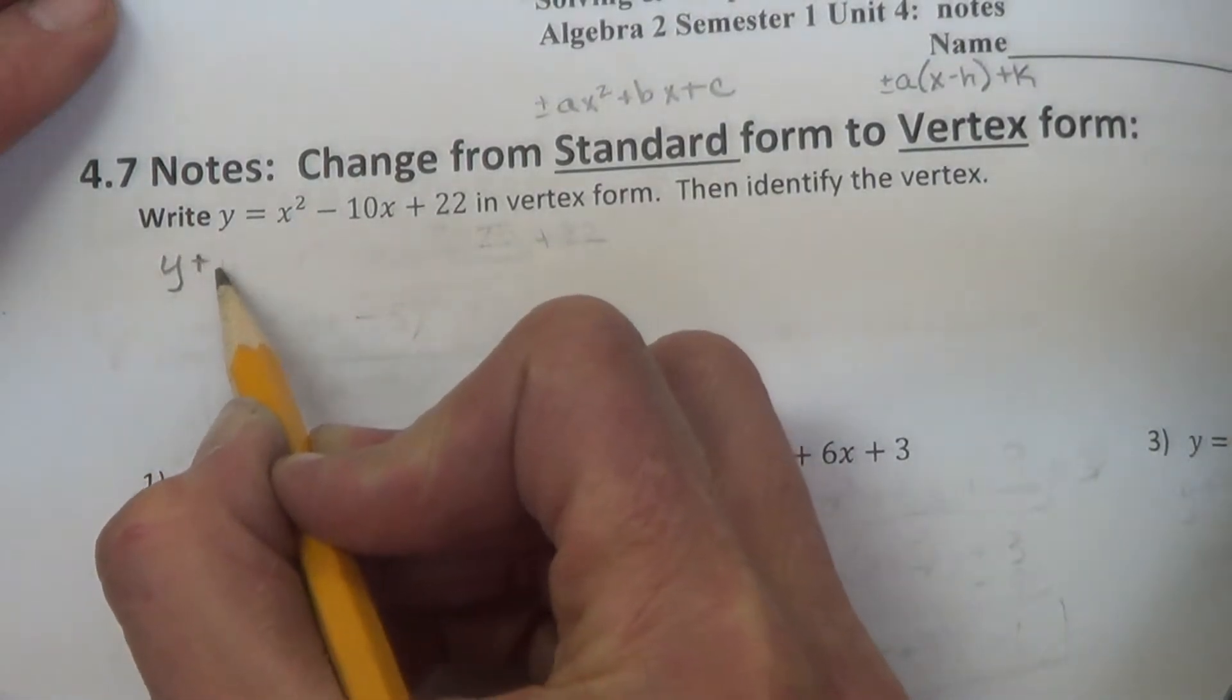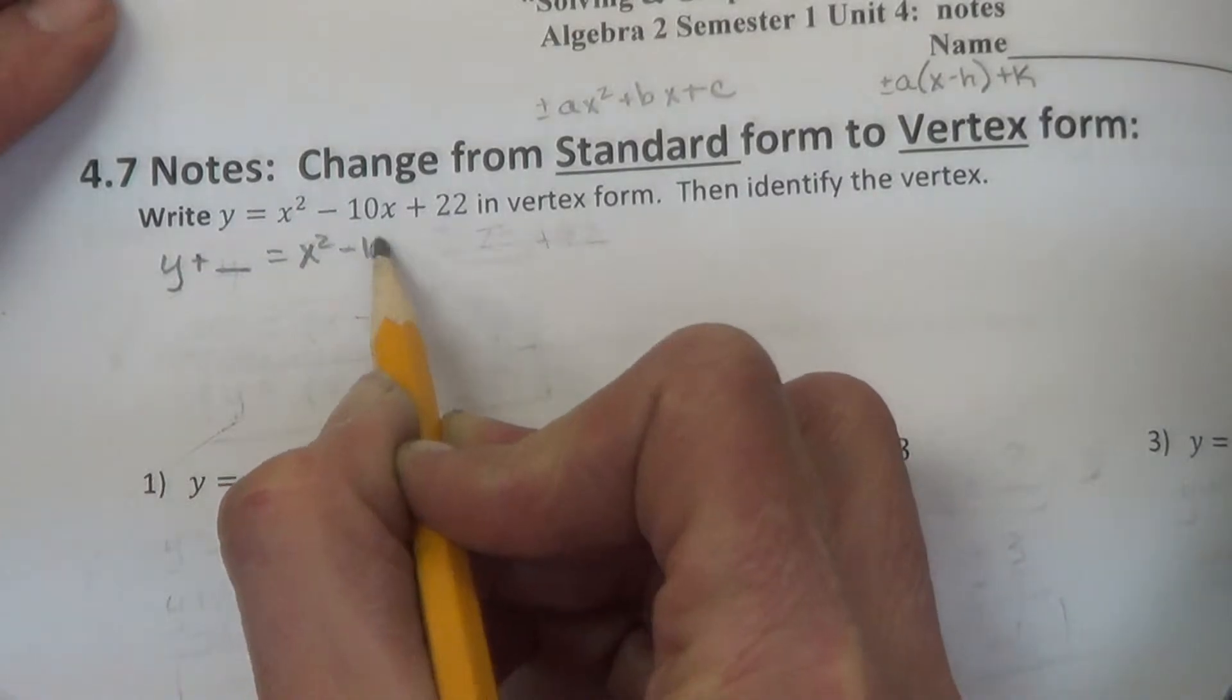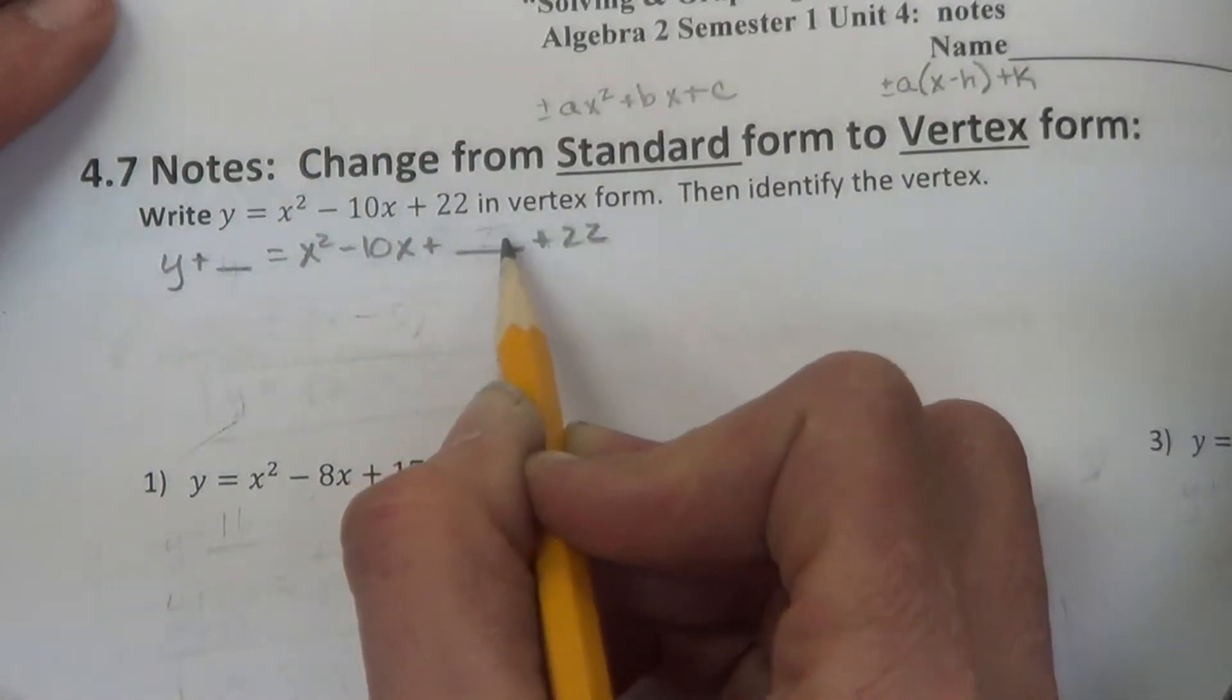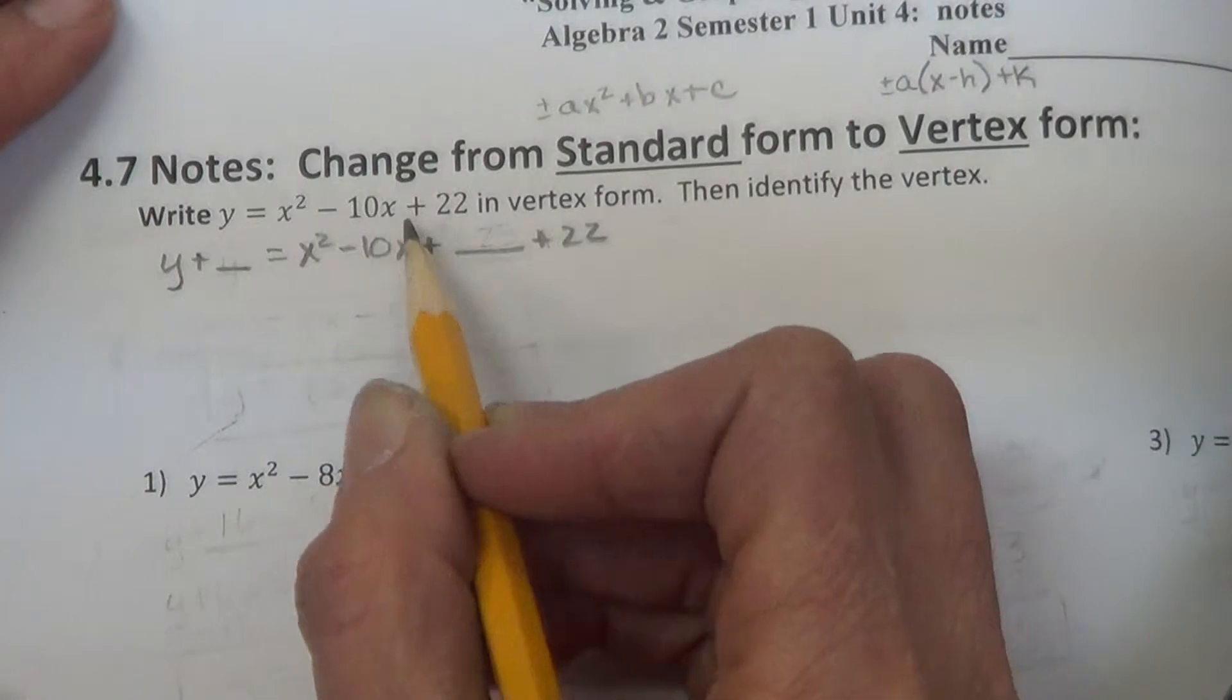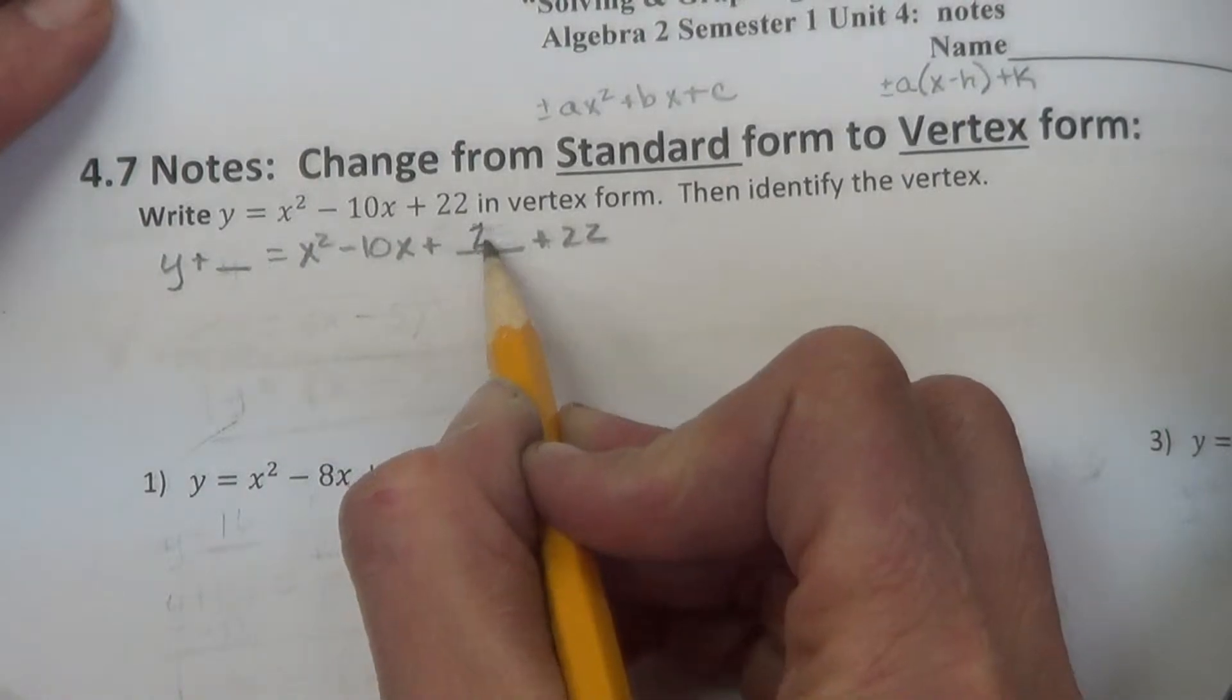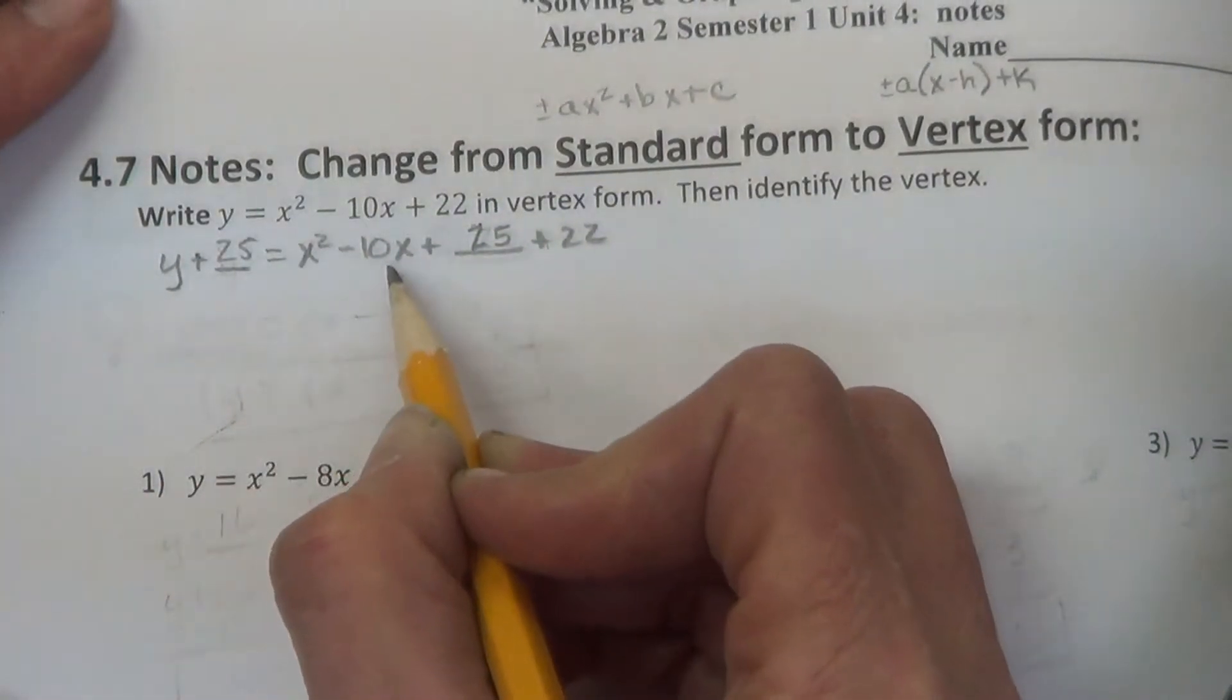So we have y plus something equals x squared minus 10x plus something plus that 22. So what we've done is we've put a blank in there to complete this as a square. Now, if you think about the tiles, we'd be splitting them into 5 and 5. So 5 times 5 would be 25. Take that middle term, cut it in half, and square it.